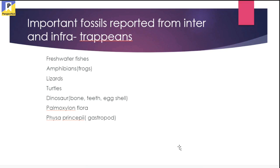These are important fossils reported from inter- and infratrapians of Deccan Trap lava flows. The fossils include freshwater fish, amphibians like frogs, lizards, turtles, different dinosaur bones, teeth, and dinosaur eggshells. A flora named Palmoxylon is found in different intertrapians and infratrapians. An invertebrate fossil named Physa princeps — a gastropod — is also found inside the traps.